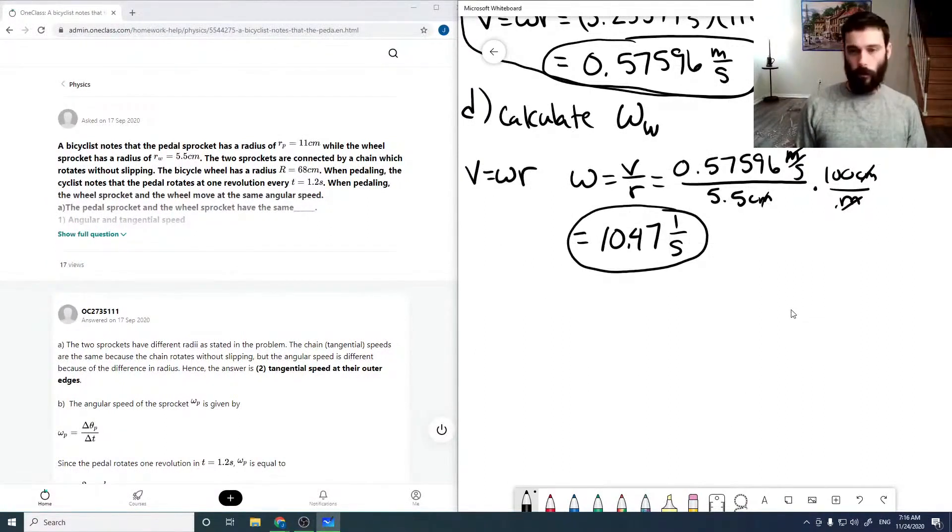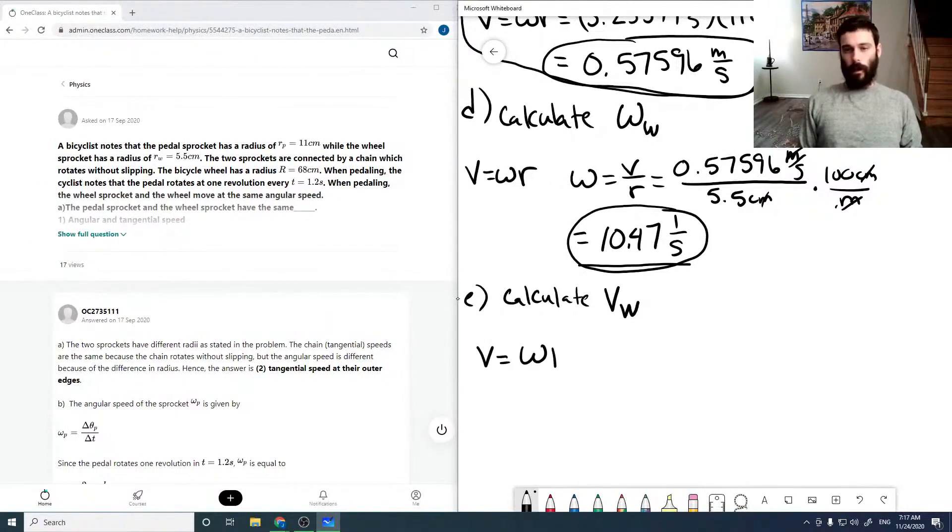Okay, and then it wants us to calculate V for the large wheel. So, in this case now, because the wheel sprocket and the wheel are both connected, they're both going to spin at the same angular frequency. So then V is omega R, where R is the radius for the large wheel.